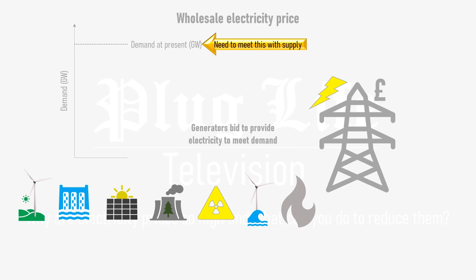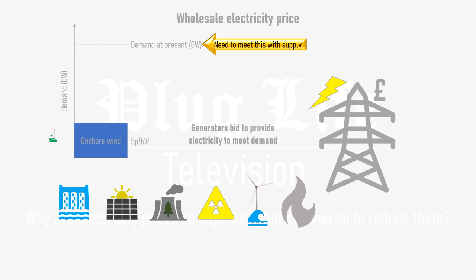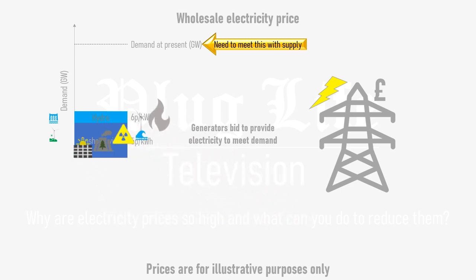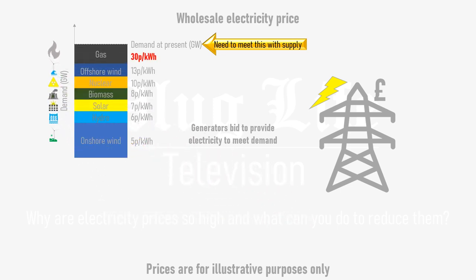The cheapest generator is added to the supply mix at their named price, followed by the next cheapest generator with their named price, and so on until all demand is met. The way the wholesale electricity market works means the wholesale price of electricity is set by the marginal plant — that's the generator that fills the last bit of grid demand at the most expensive price.